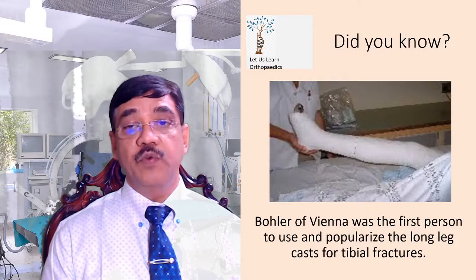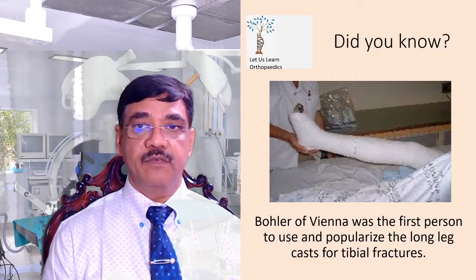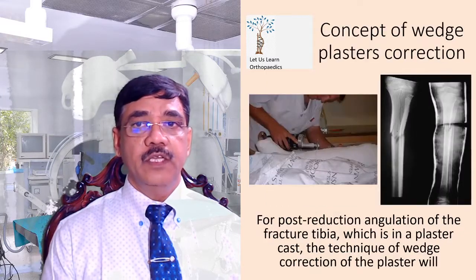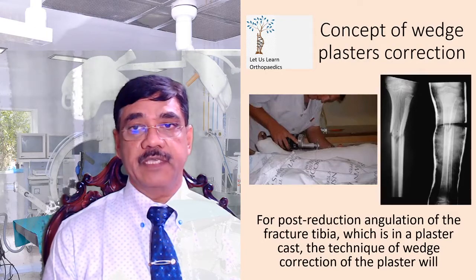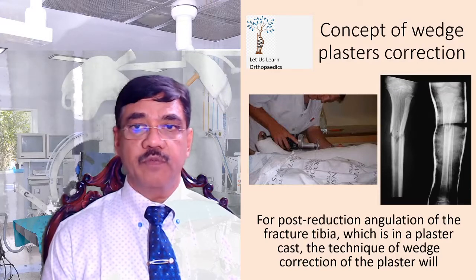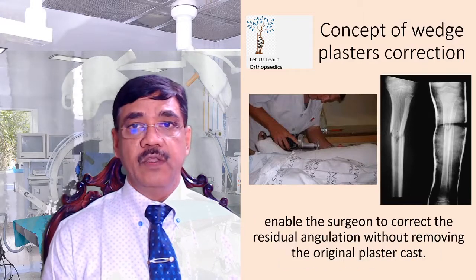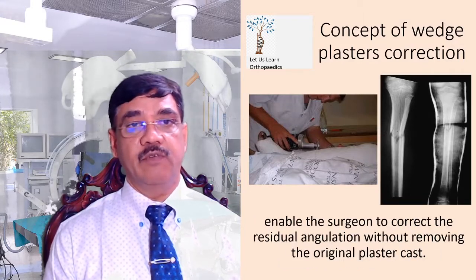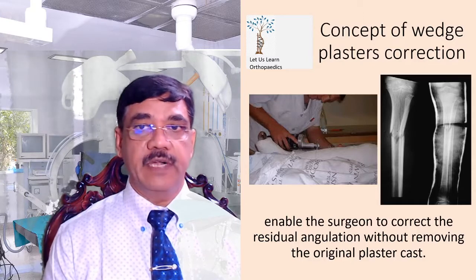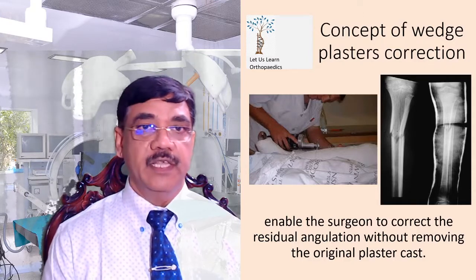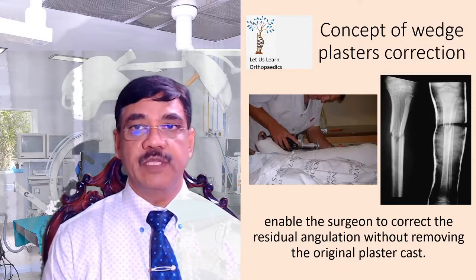Bowler of Vienna was the first person to use and popularize the long leg cast for tibial fractures. Post-reduction, there is the concept of waist plaster technique correction. Post-reduction angulation of the fracture tibia in the plaster cast can be corrected using the waist correction technique, which enables the surgeon to correct residual angulation without removing the original plaster cast. Nowadays most cases are treated surgically, but this concept remains important to know.